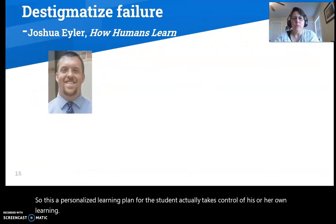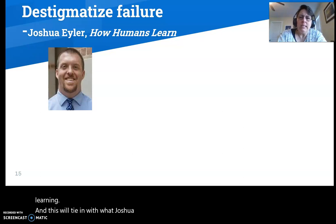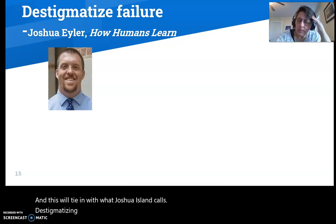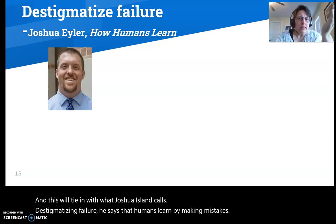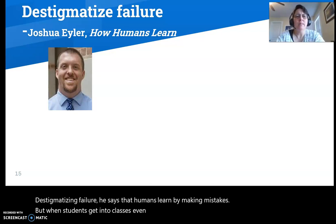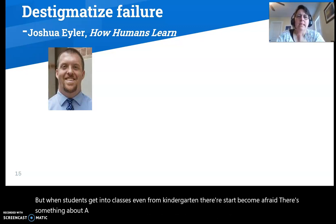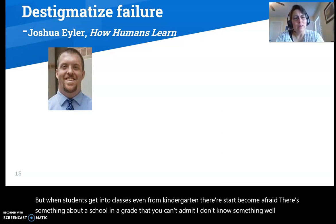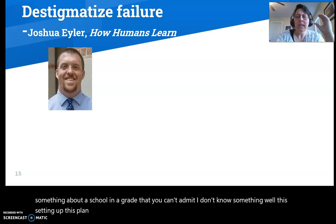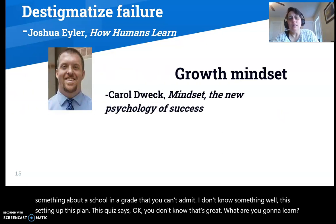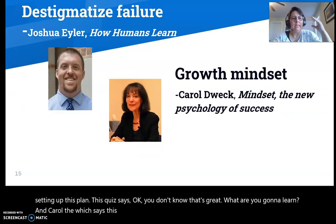So this becomes a personalized learning plan where the student actually takes control of his or her own learning. And this will tie in with what Joshua Eiler calls destigmatizing failure. He says that humans learn by making mistakes. But when students get into classes, even from kindergarten, they start to become afraid. There's something about a school and a grade that you can't admit I don't know something. Well, this setting up this plan, this quiz says, okay, you don't know. That's great. What are you going to learn? And Carol Dweck says this is growth mindset - to say there is potential. Let's move forward.